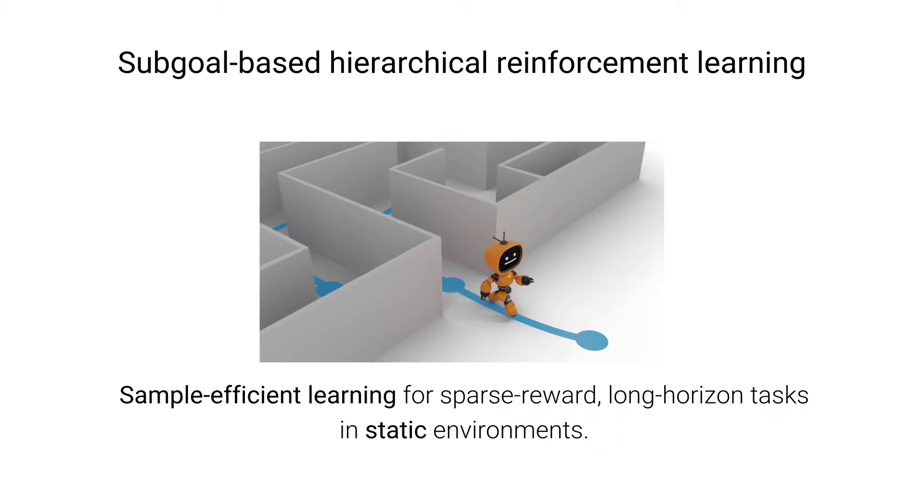Credit assignment in sparse reward long horizon tasks still poses a challenge for reinforcement learning algorithms. One way of tackling this challenge is to break the problem down into training a high-level policy to choose suitable subgoals and a low-level policy to pursue them.